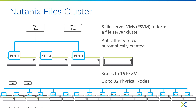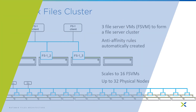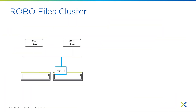This allows you to scale to tens of thousands of user connections and petabytes of data in a single namespace. For smaller ROBO environments made up of one or two physical nodes, you would deploy a single file server VM that would represent a file server instance.